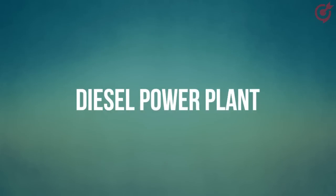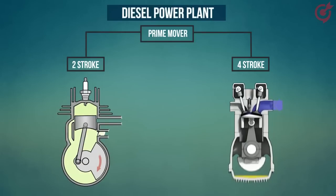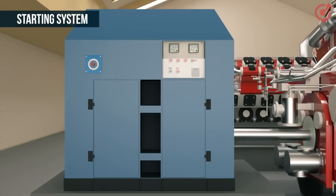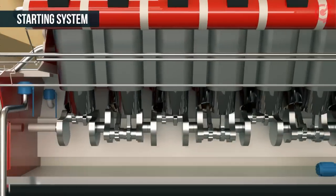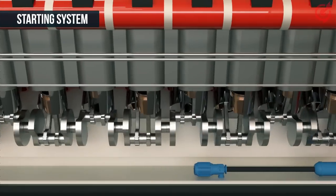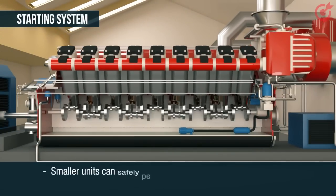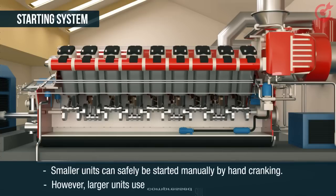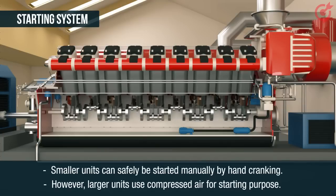In a diesel power plant, the prime mover is a two-stroke or a four-stroke multi-cylinder diesel engine. The starting system provides the initial rotation to the engine shaft required to start the engine. Smaller units can be started manually by hand cranking; however, larger units use compressed air for starting.